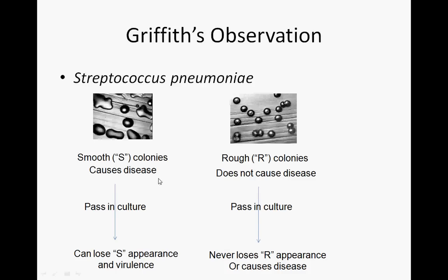An important point was that the smooth colonies caused disease in mice — and humans — while the rough ones did not. When he kept passing rough colonies in the lab, they never lost that rough appearance. But when he kept passing the smooth ones, they would lose their smooth appearance and become rough. So the smooth colonies had something they could lose, and the rough colonies simply lacked something that made them smooth.